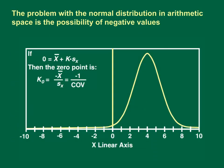This graph shows the left side of a hypothetical normal distribution on an arithmetic scale. The vertical scale is the probability density and the horizontal scale shows the hypothetical data values. The problem with the normal distribution in arithmetic space is the possibility of negative values. The tails of the normal distribution are infinite, although infinitely small beyond a few standard deviations. Hydrologic data can be highly variable, and this can result in a substantial probability for producing negative values for large sample sizes if a normal distribution is used.